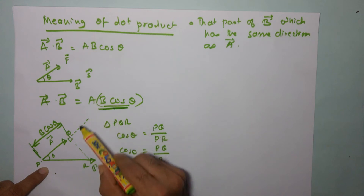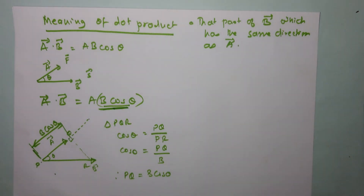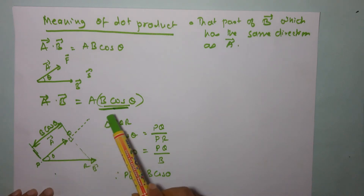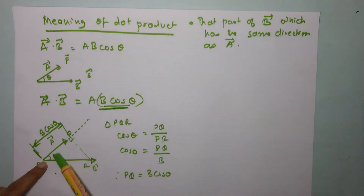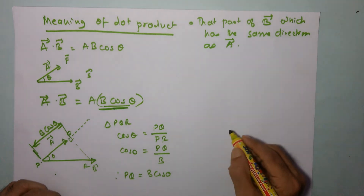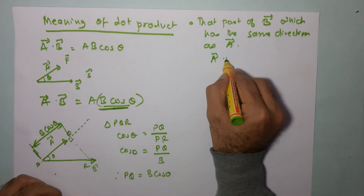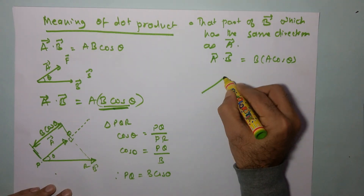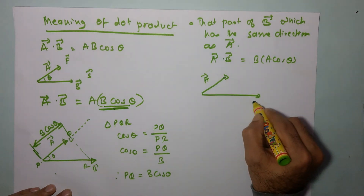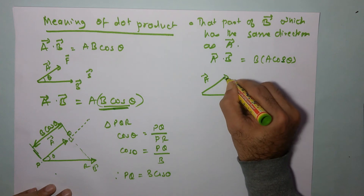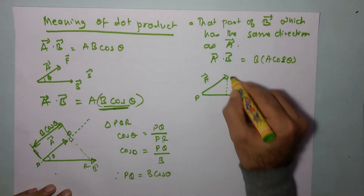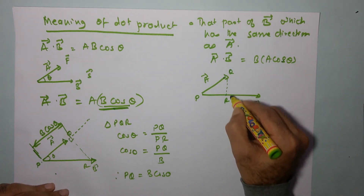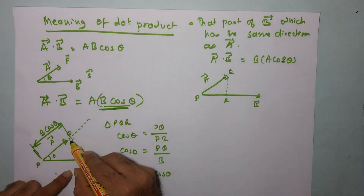Since b cosθ and vector a have the same direction, for this dot product the direction loses its significance — because we are taking that component of the other vector which is in the same direction as vector a. Now I will do the same activity considering a cosθ. Vector a·b can also be written as b(a cosθ). Taking vectors a and b again — in this case, I want to find out a cosθ, so I will drop a perpendicular from vector a onto vector b. I will call this triangle PQR, where the right angle is at Q.